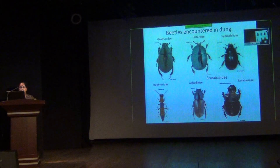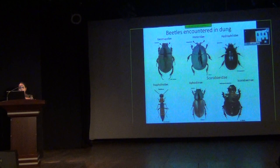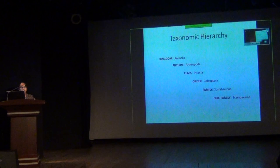The Aphodiinae and Scarabinae are the sub-families of beetles found in dung. Coming to the taxonomic hierarchy of Scarabinae, they belong to order Coleoptera, family Scarabaeidae, and sub-family Scarabinae.